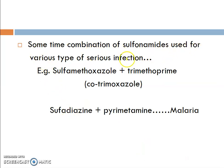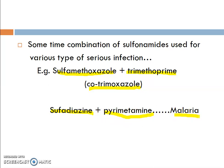Sometimes combinations of sulfonamides are used for various serious infections. Sulfamethoxazole plus trimethoprim is called cotrimoxazole — a very well-known combination. Another example is sulfadiazine plus pyrimethamine, used in the treatment of malaria. These combinations are used for various complex types of infections.